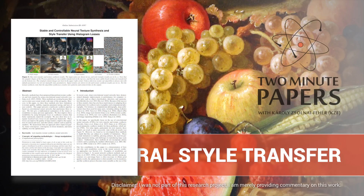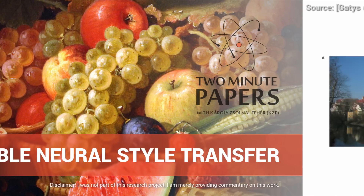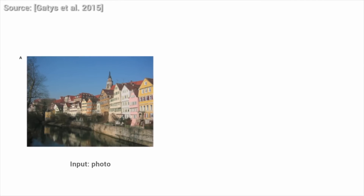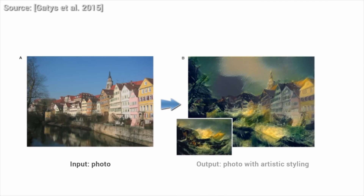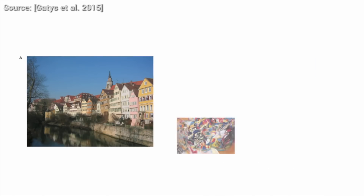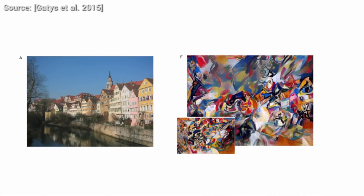Dear Fellow Scholars, this is Two Minute Papers with Károly Zsolnai-Fehér. Neural style transfer is an incredible technique where we have two input photographs and the output would be a combination of these two — namely the content of one and the artistic style of the other fused together.